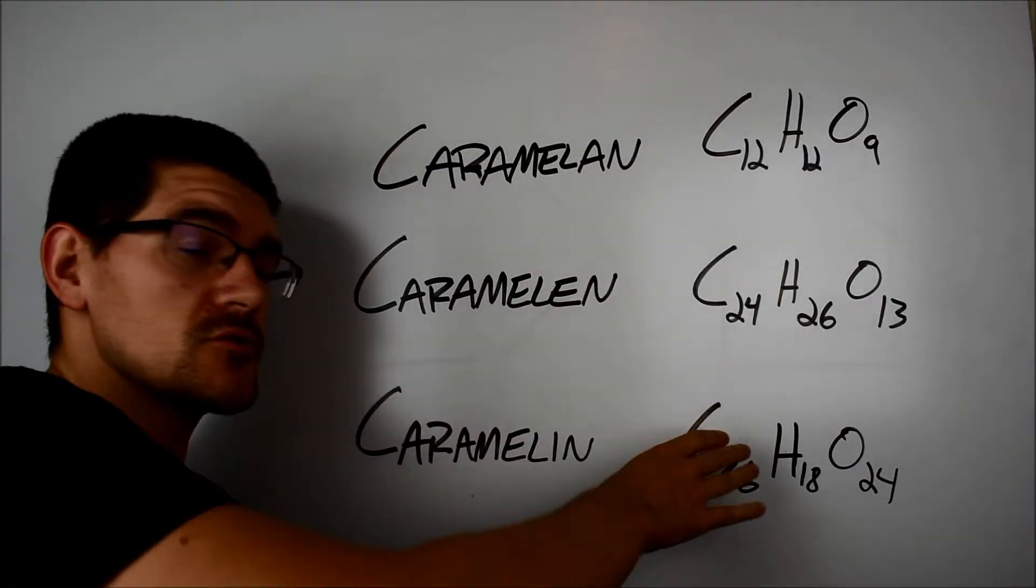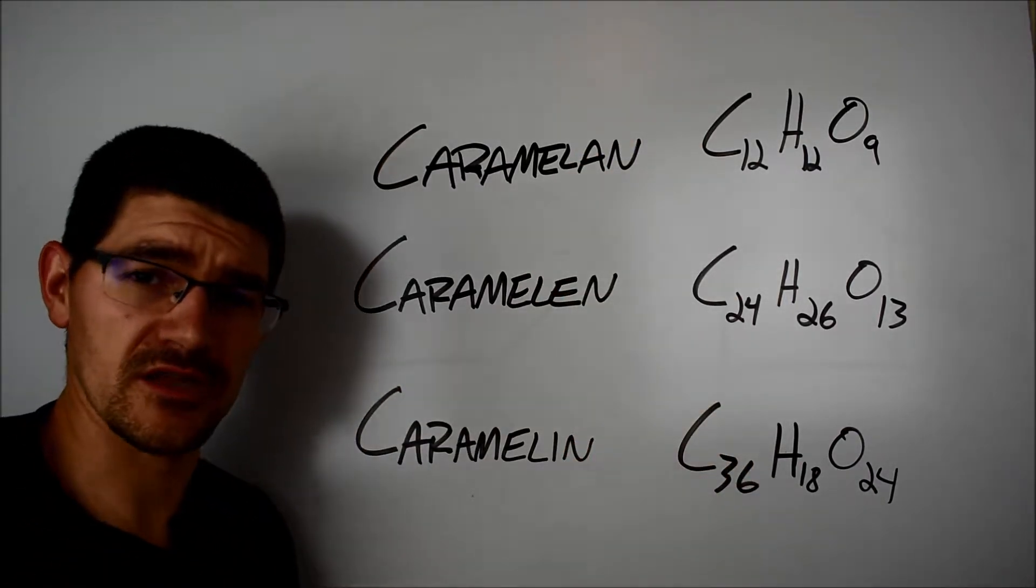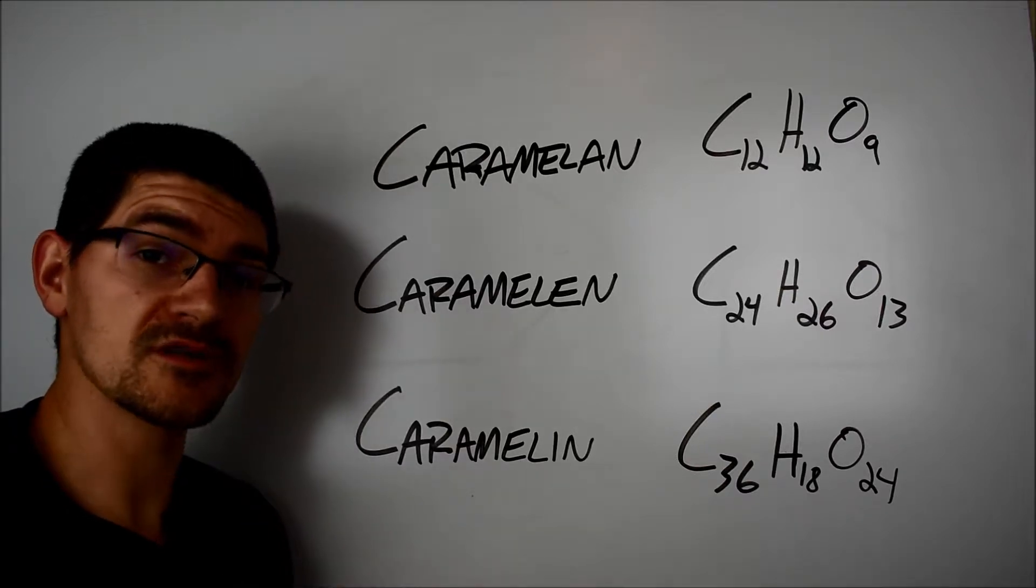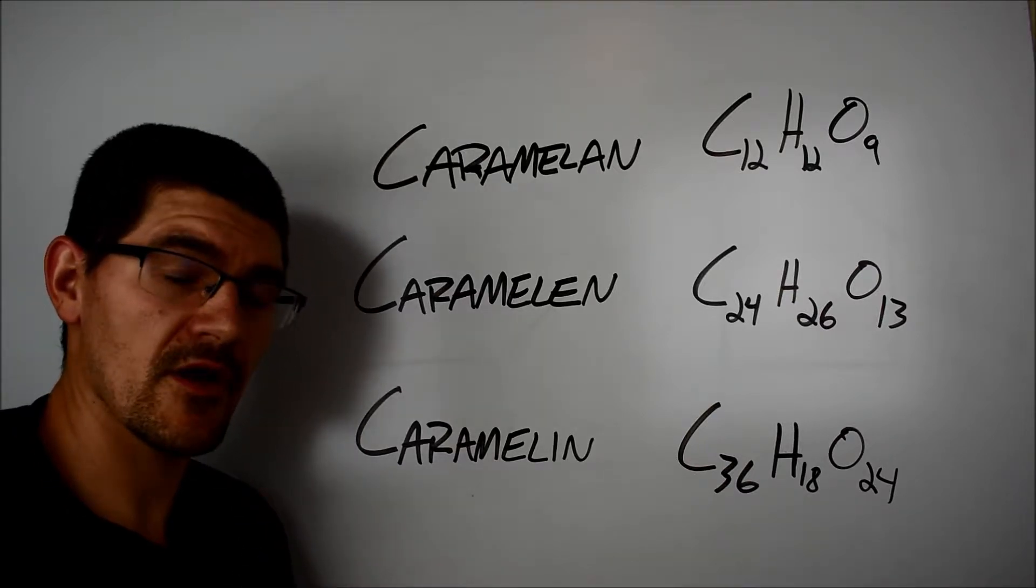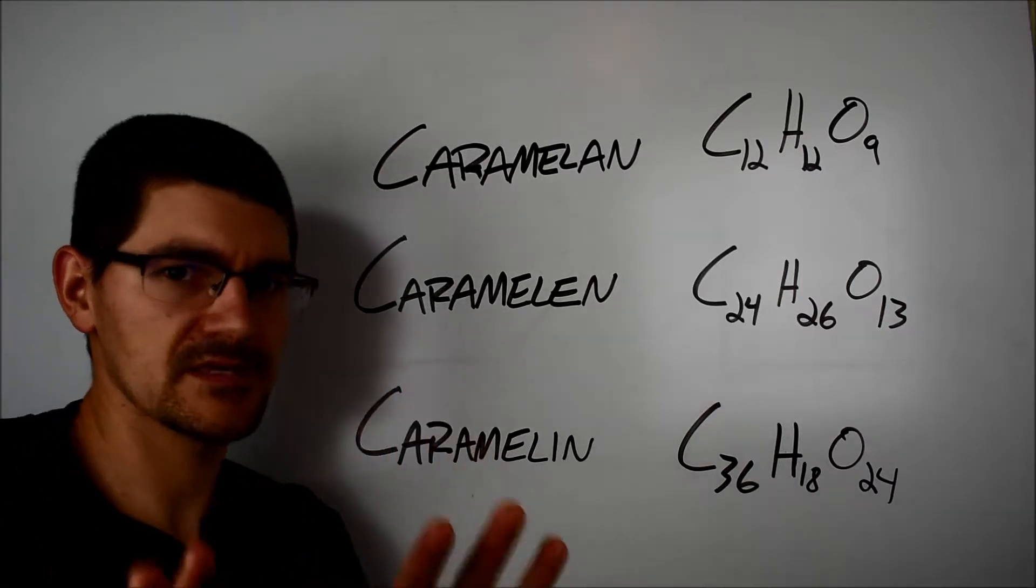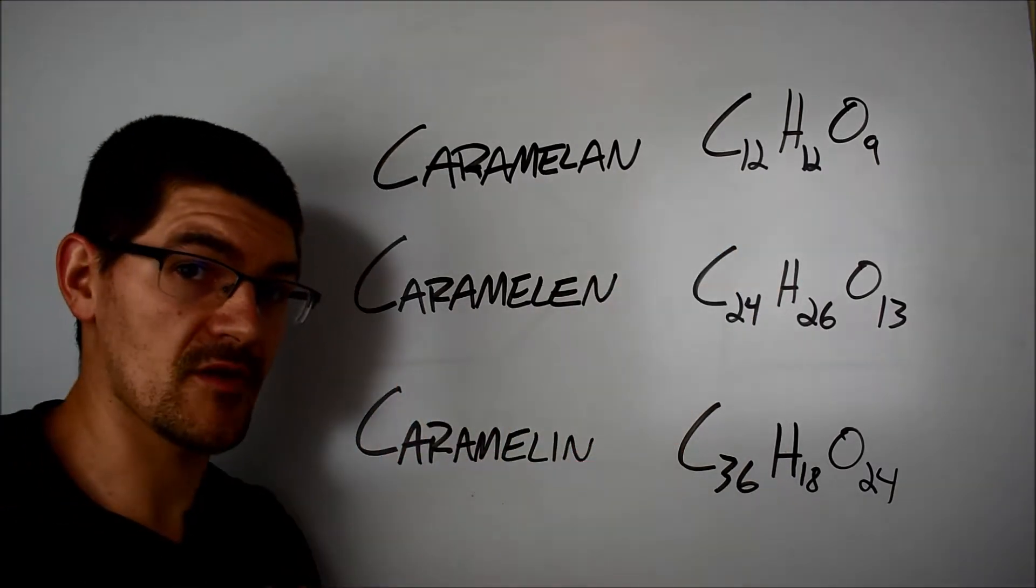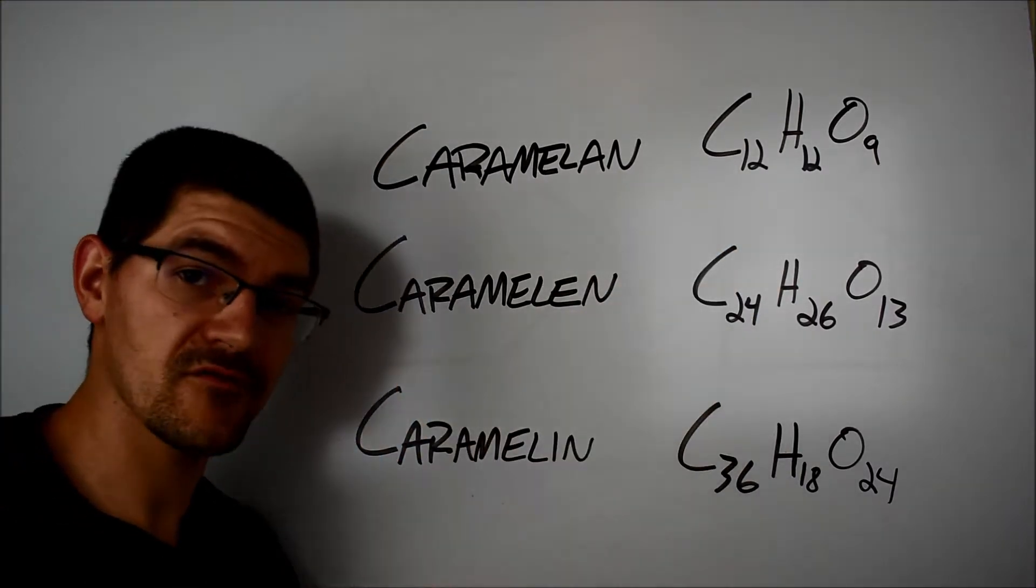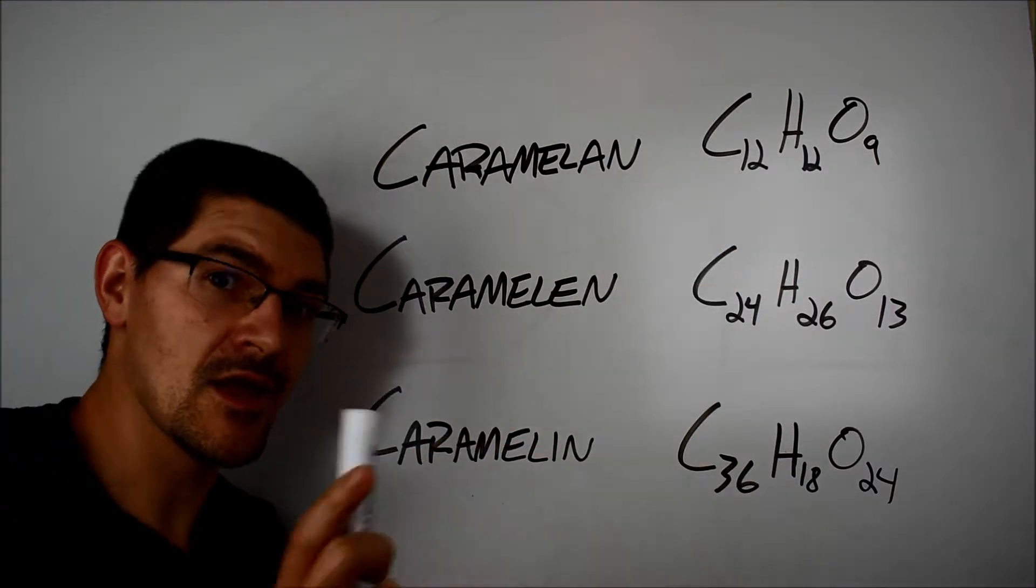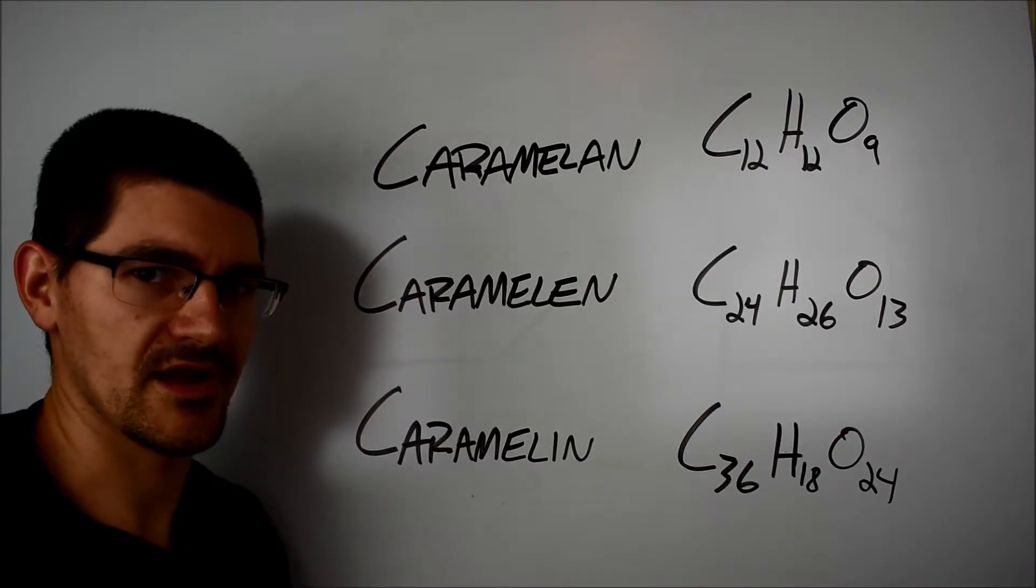At the same time, what I like to do is instead of thinking about the raw numbers of the carbons here, we talk about carbohydrate units. So we have glucose and fructose, both six carbon monosaccharides, even though in the linear form, the glucose has an aldehyde, where the fructose has a ketone, still have six carbons. So for Caramelan C12, we have two carbohydrate units. Caramelan C24, we have four, and for Caramelin, those of you excellent at math, we have a total of, yes, six carbohydrate units.